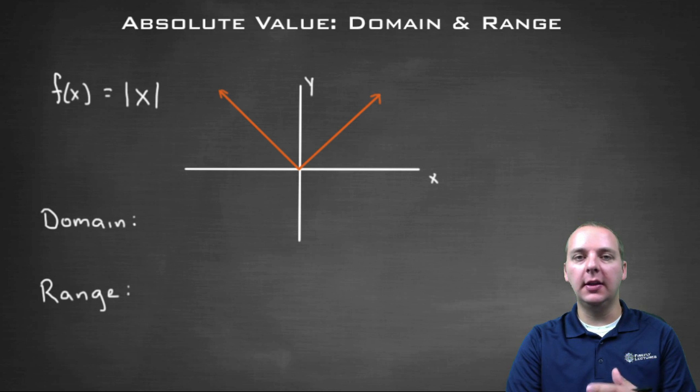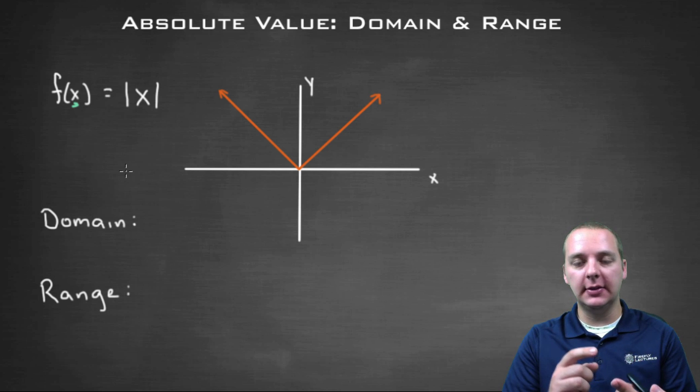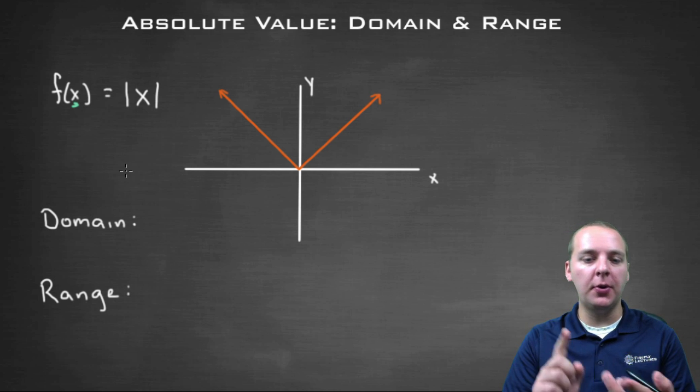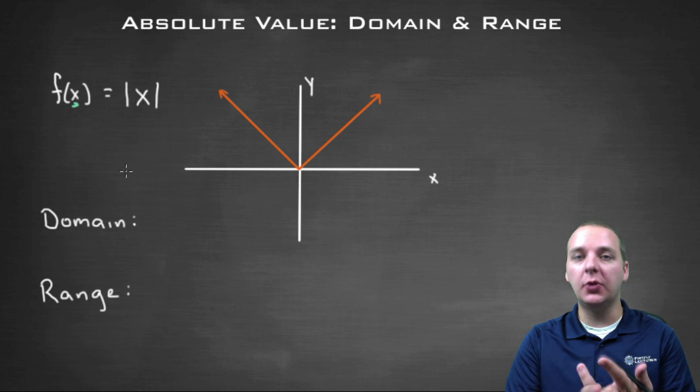When talking about functions, the domain of a function is the set of x values that you're allowed to plug into the function and get some acceptable output. You have to watch out for things like division by zero or negatives under square roots and things like that that would yield values that don't make sense.